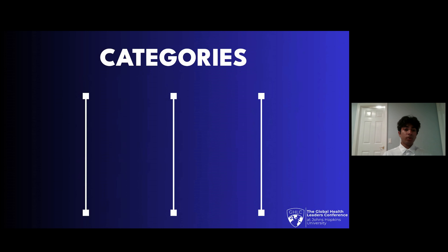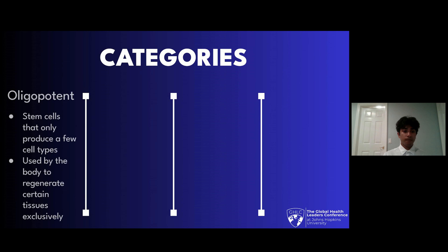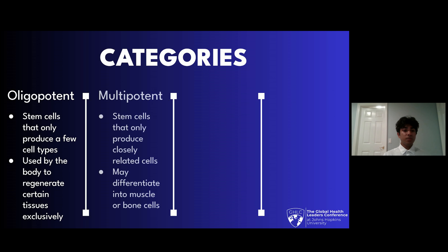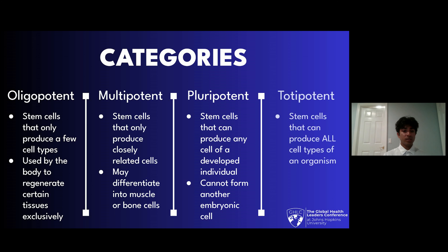Stem cells can be broken down into four different categories. Oligopotent stem cells are stem cells that can only produce a few types of cells. A subcategory of this is unipotent cells, which can only differentiate into a single type of cell. Multipotent stem cells produce a slightly larger range of cells and commonly are the source of muscle and bone tissue. Pluripotent and totipotent stem cells can produce any type of cell, with the exception that pluripotent cells cannot form cells found in an embryo.